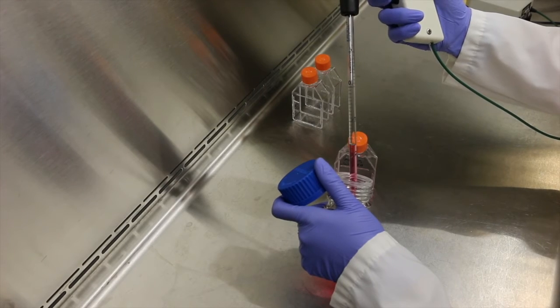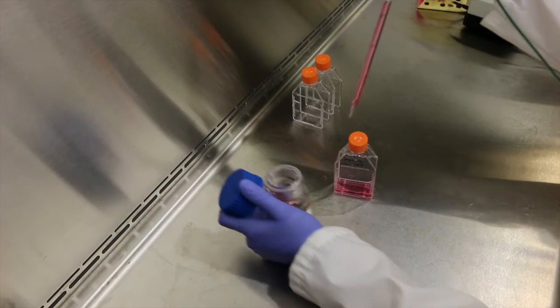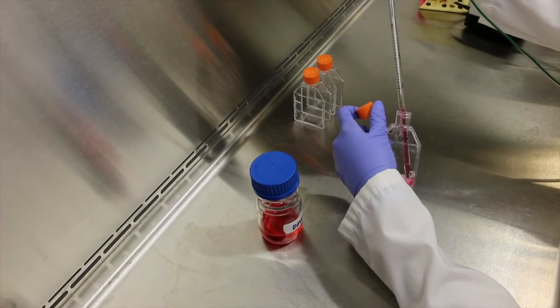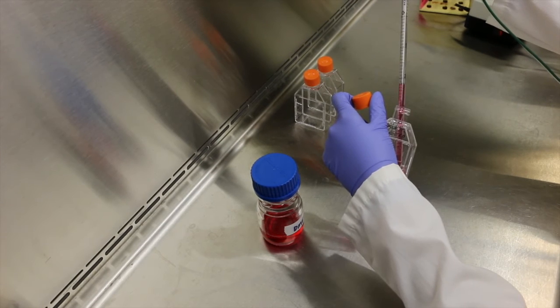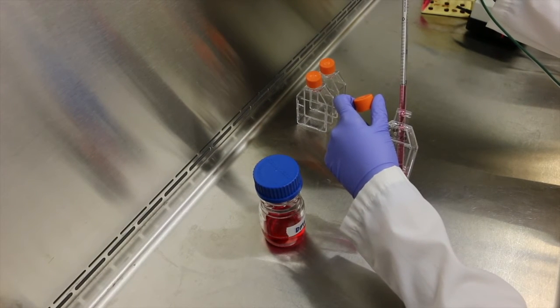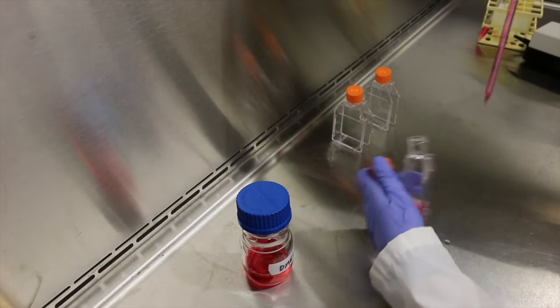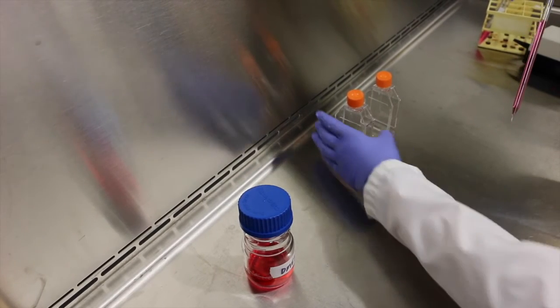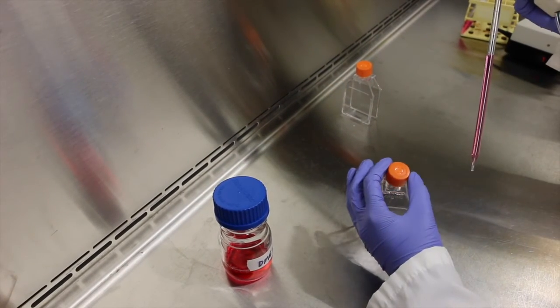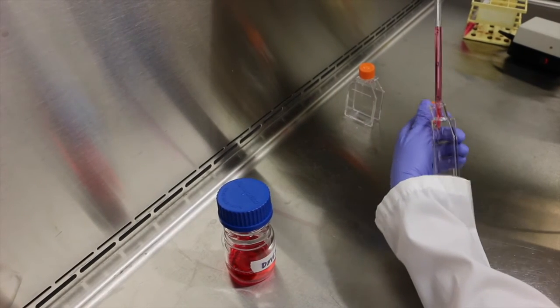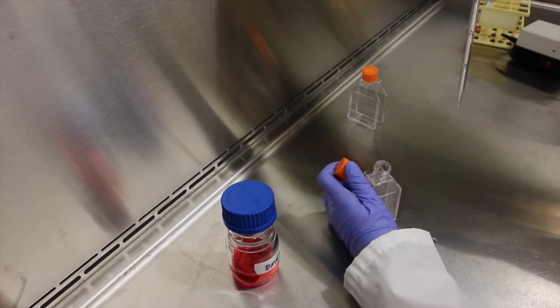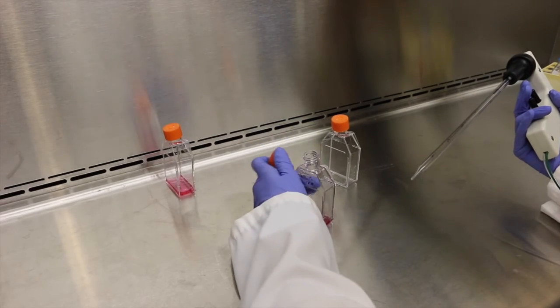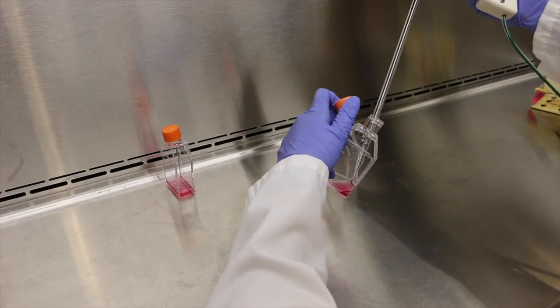In this example, we'll be splitting our cells into two flasks. Add an additional 3.5ml of media to your cells, bringing the total volume of liquid up to 7ml. Re-suspend the cells, ensuring not to add any air bubbles. Immediately remove 3.5ml of cells and add it to a new sterile culture flask. Remove the remaining 3.5ml of media and cells and add to the second sterile tissue culture flask.